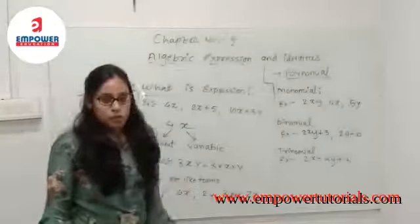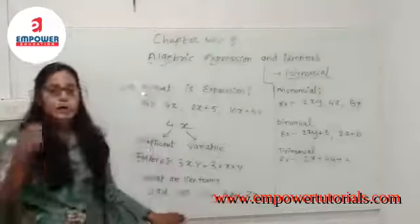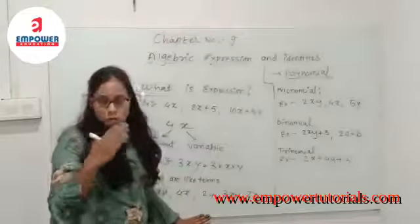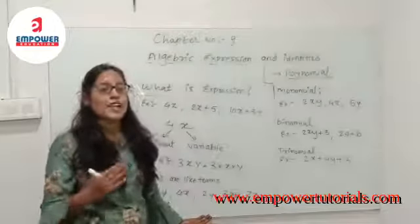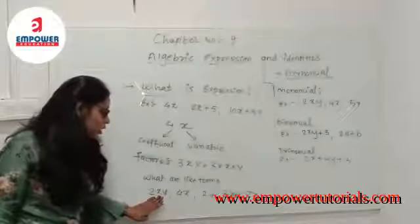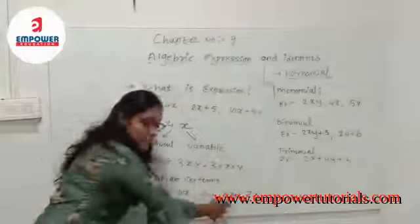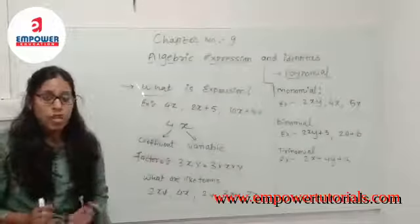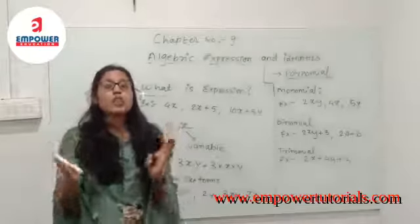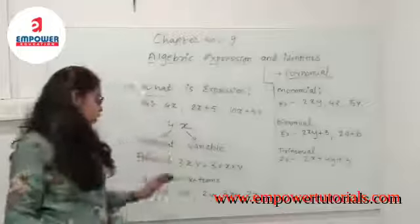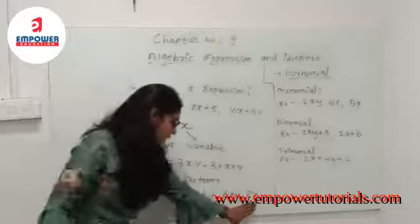Now what are like terms? To identify like terms, the coefficients may be different but the variables should be the same — those are called like terms. For example, 2xy and 3xy, or 4x and 7x. In addition of algebraic expressions, we combine those like terms and add them. So 2xy and 3xy are like terms, and 4x and 7x are like terms.